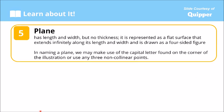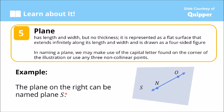The next undefined term is the plane. A plane has length and width but no thickness. It is represented as a flat surface that extends infinitely along its length and width, and it is usually drawn as a four-sided figure. In naming a plane, we use a capital letter found at the corner of the illustration, or we may also use any three non-collinear points in the plane. Example: the plane on the right can be named Plane S, or named using three non-collinear points.